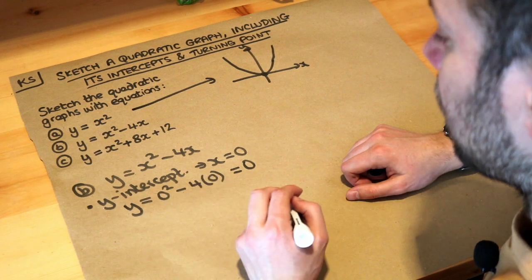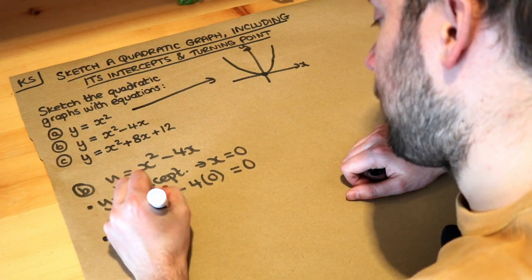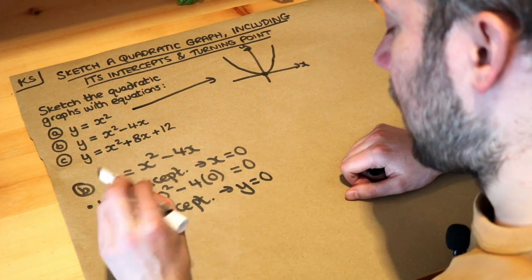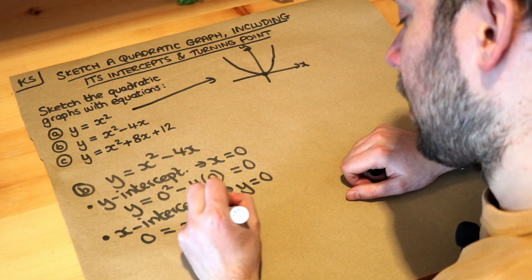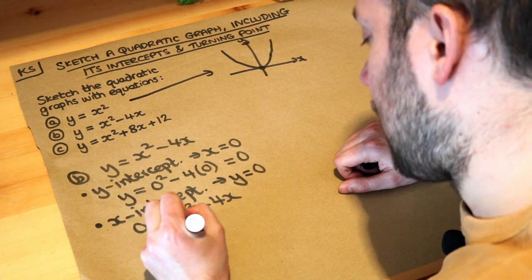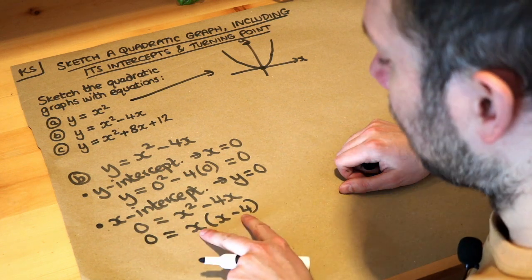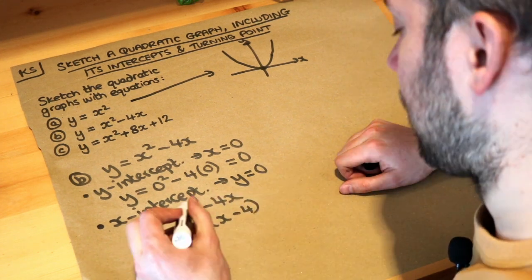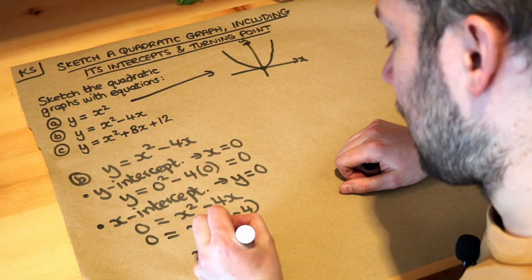So when x is zero, y is zero — it goes through the origin. To find the x-intercepts we make y equal to zero, giving zero equals x squared minus 4x. We have a common factor of x, so we factorise: x(x minus 4) equals zero. Therefore either x equals zero, or x minus 4 equals zero, giving x equals 4.